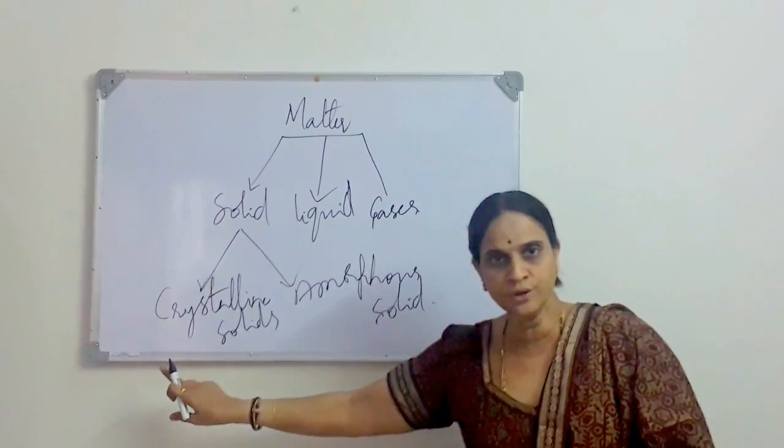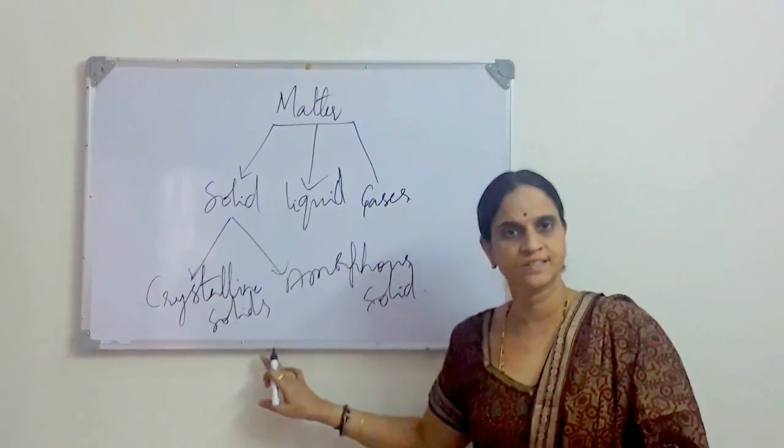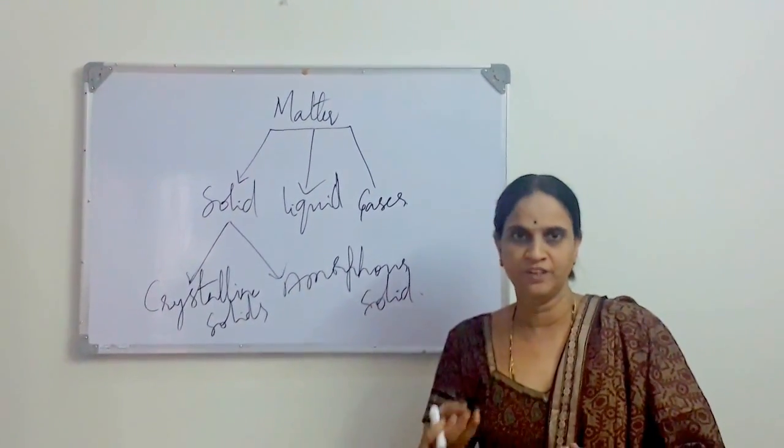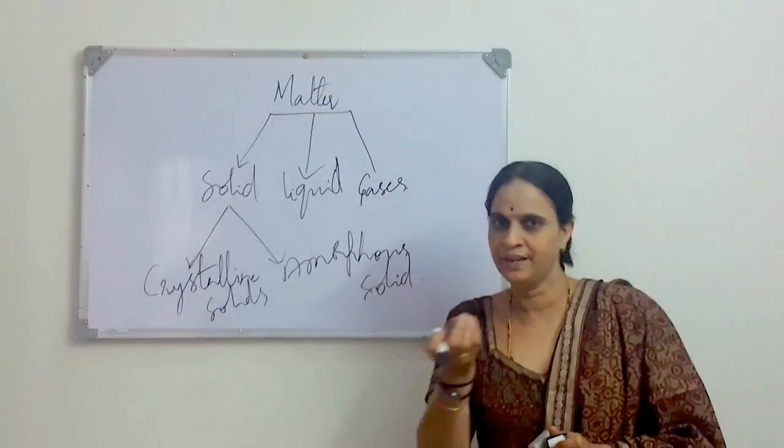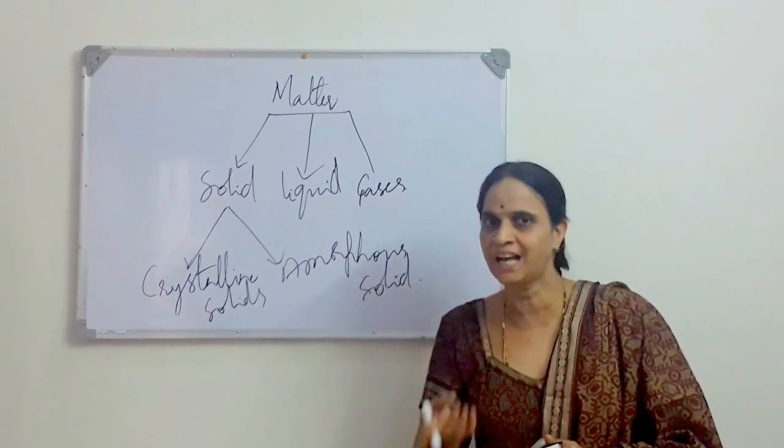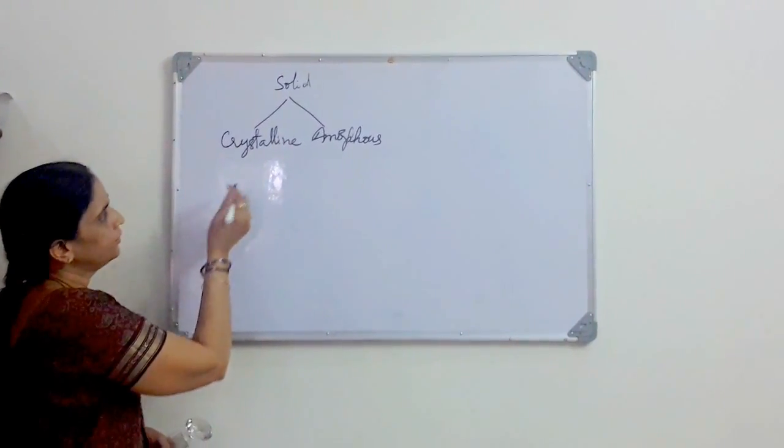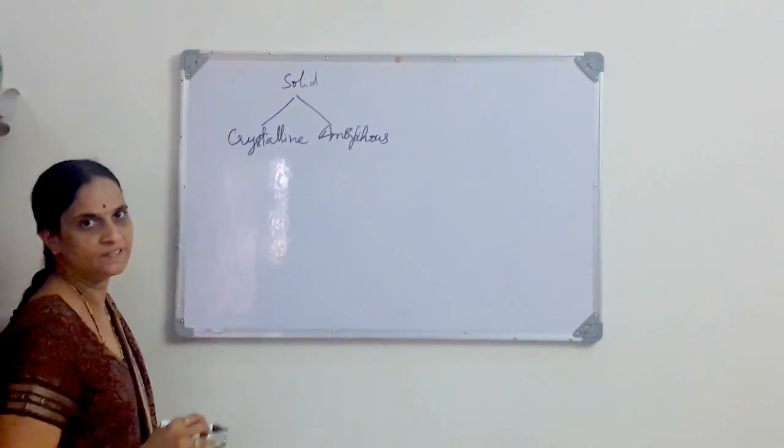And the other kind of solid we know is amorphous. So let us know in detail what is a crystalline solid and what is an amorphous solid with day-to-day materials which I have. I will show it to you. So solids are of two kinds: crystalline and amorphous.